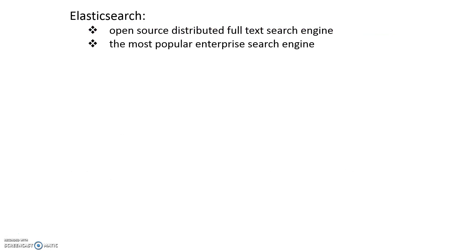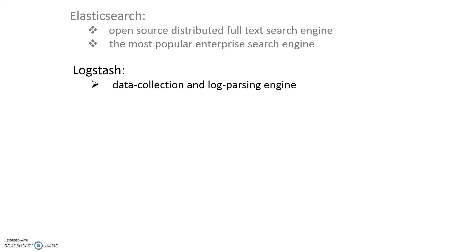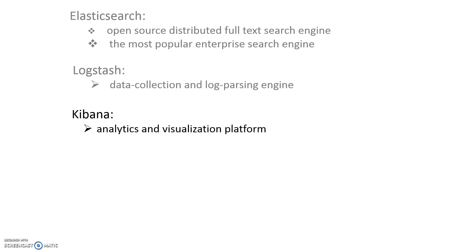Elasticsearch is an open source distributed full-text search engine and it is the most popular enterprise search engine. It is used by many famous companies such as Facebook, GitHub, and Quora. Logstash is used for importing data to Elasticsearch from different sources — it is a data collection and log parsing engine — whereas Kibana is used to analyze and visualize data that resides in Elasticsearch.